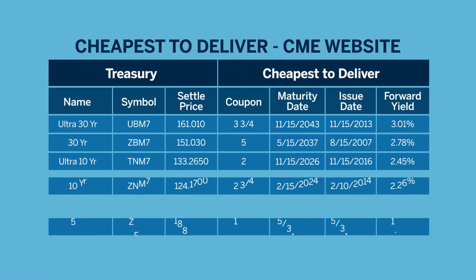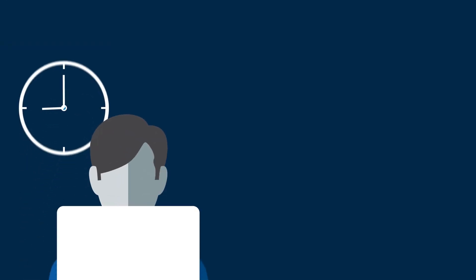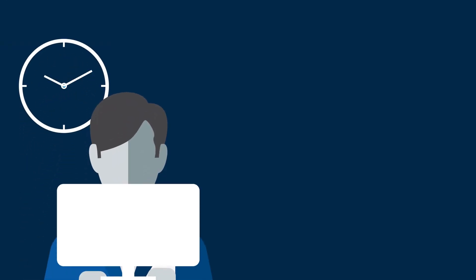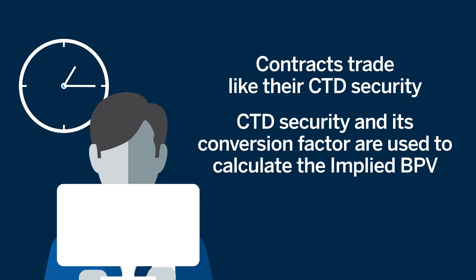A US Treasury futures contract's CTD security is the eligible bond or note that is most financially efficient for the short position to deliver to the long position at contract expiration. The reason we want to know about the CTD security is twofold: one, contracts trade like their CTD security; and two, we will use the CTD security and its conversion factor to arrive at that contract's implied BPV.